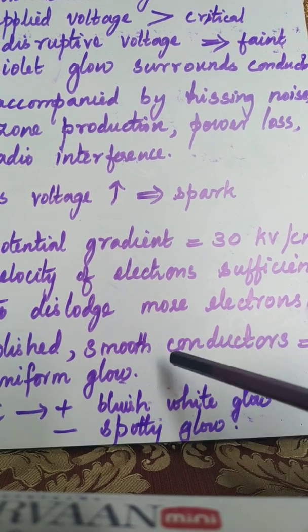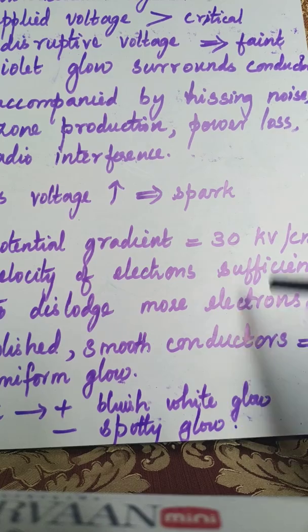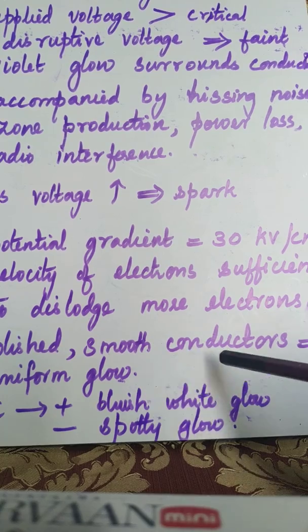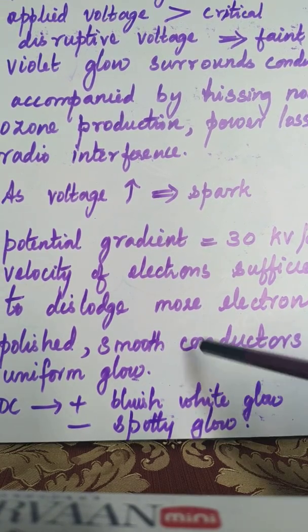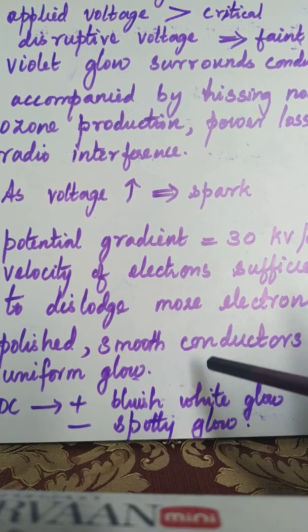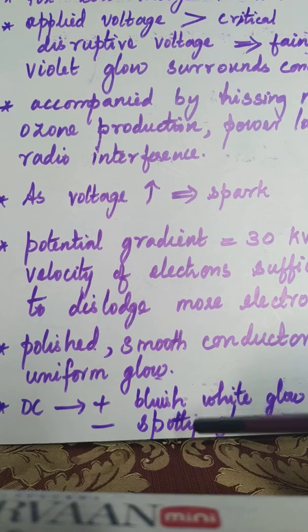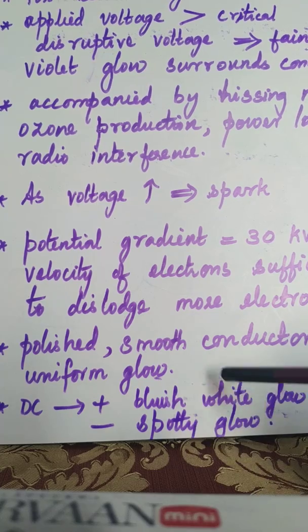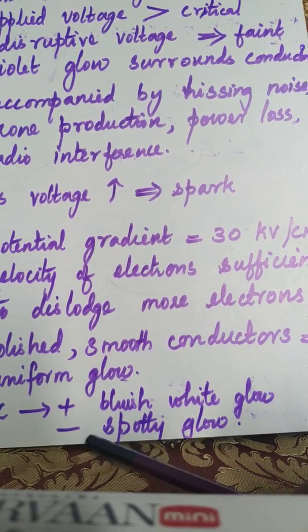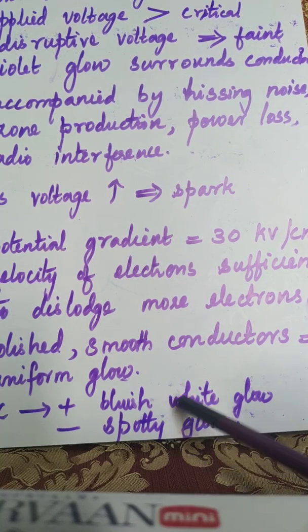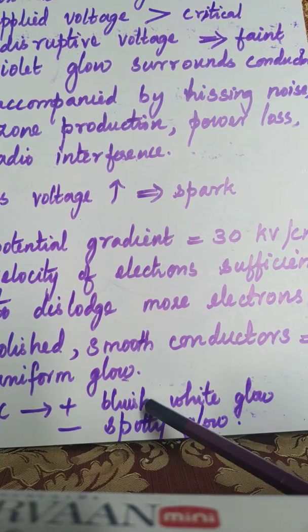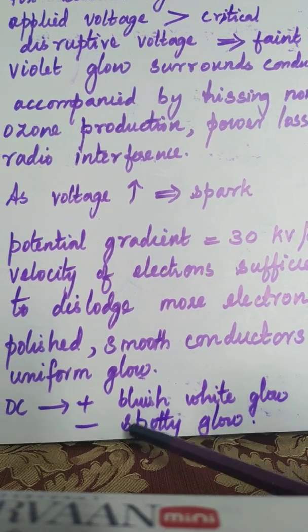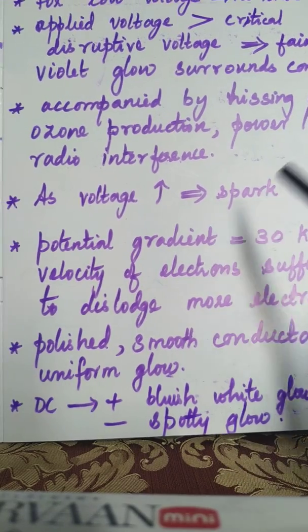For polished and smooth conductors the severity of corona is less, and we can see a uniform glow throughout the length of the conductor. If the surface is not smooth, we can see spotty glows. The appearance of corona also varies for a DC transmission line versus an AC transmission line. For DC lines, on the positive conductor corona appears as a bluish-white glow, whereas on the negative conductor it appears as a spotty glow.